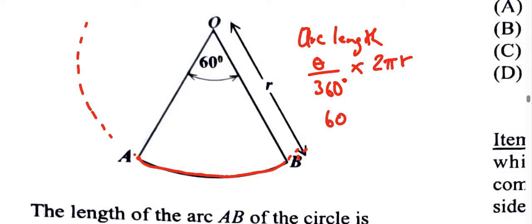So that's 60 out of 360 times 2πR. They did not give us the measure for R, and we're not going to convert pi, obviously not.